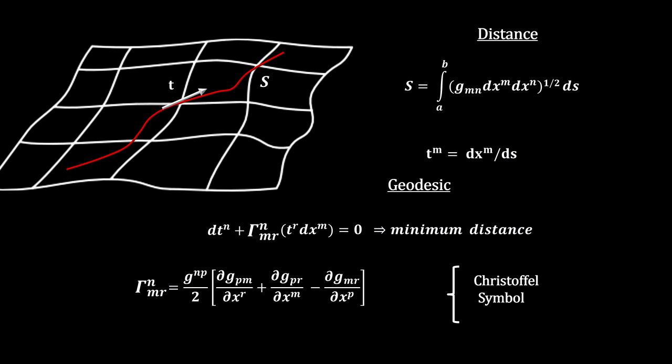Now that we have a way to measure distance and find geodesics, we can determine a space's curvature. Riemann used a concept called Parallel Vector Transport. Picture moving a vector around a triangle in flat space in such a way that it remains parallel to the starting vector. By the time we get back to the start, we have the exact same vector as we started with.